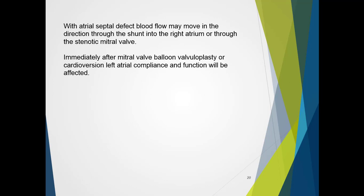Additionally, in the presence of an atrial septal defect, blood flow may move in the direction through the shunt, into the right atrium, or through the stenotic mitral valve. As flow will take the path of least resistance, significant blood flow may move into the shunt and thus reduce the maximum velocities of the mitral flow profiles, and thus the deceleration slope that we measure. Immediately after mitral valve balloon valvuloplasty or cardioversion, the left atrial compliance and function will be affected. It is not appropriate to perform this pressure halftime calculation in these instances.